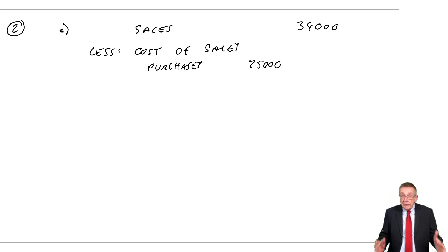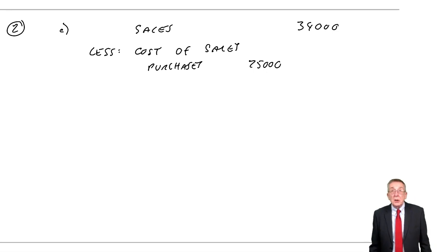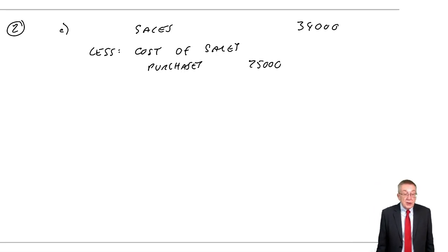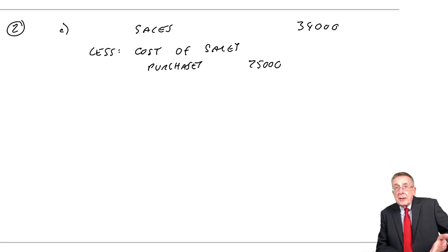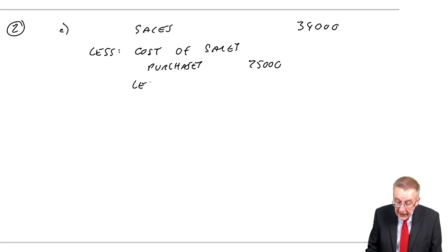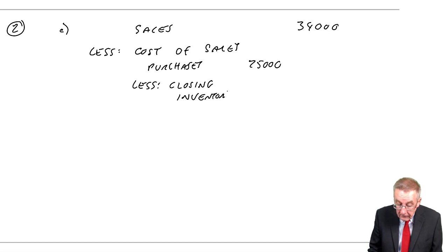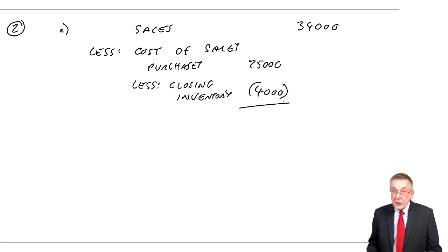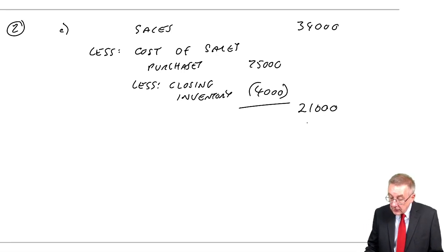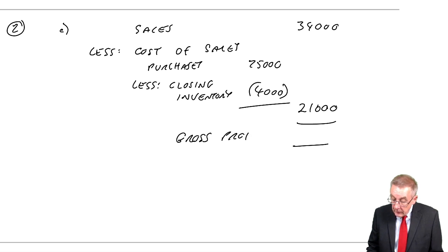To get the cost of what we sold, we know what we bought — the purchases were 25,000. But that's the total cost of everything we bought. Not all of it was sold, because although we bought goods for 25,000, some of them were still left in inventory at the end — 4,000 left behind. If you bought 25,000 and 4,000 weren't sold, only the remaining 21,000 were sold. To get the cost of sales, we subtract the closing inventory. After 25,000 bought, 4,000 were still there. Only the remaining 21,000 were sold; they were sold for 34,000, and therefore the profit was 13,000.